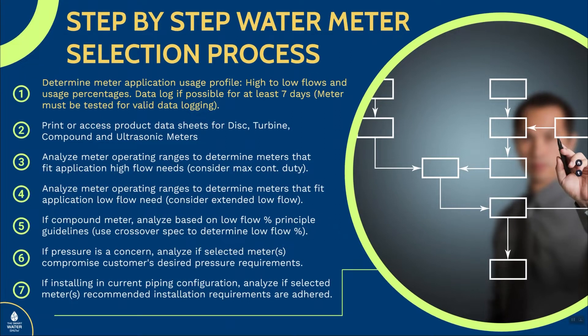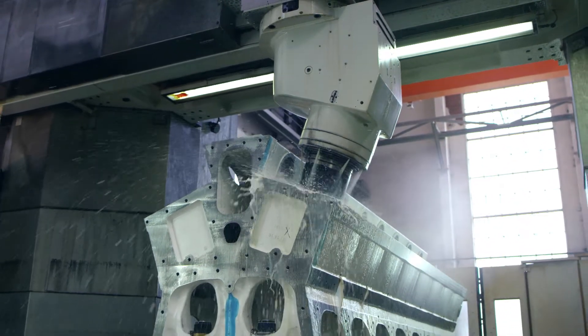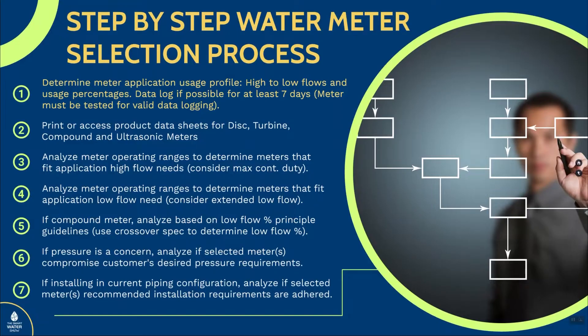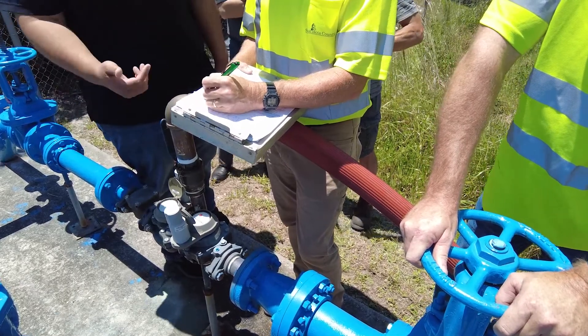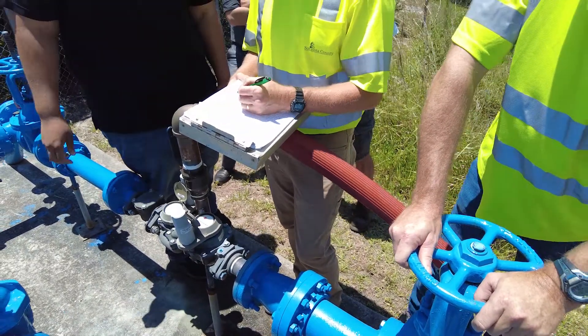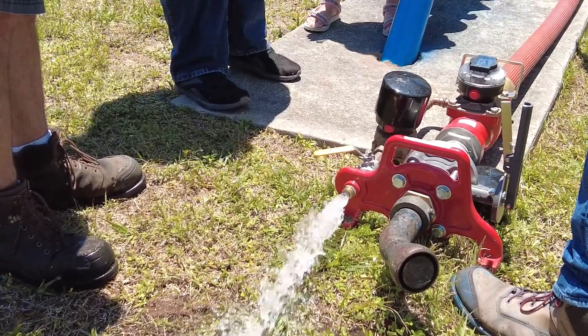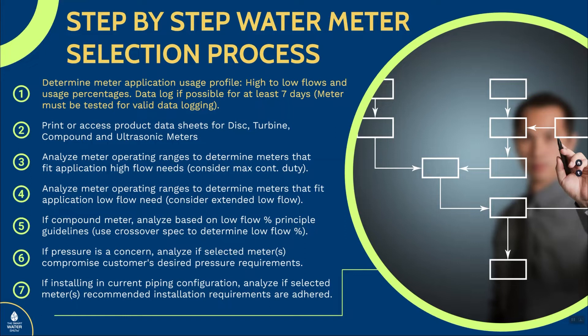The data logging process should be done for at least seven days because flows are going to be different during the week versus the weekend. If you don't run it for seven days, you might be misapplying a meter. Also, you actually have to test the meter prior to data logging. Otherwise, if the meter is only 80% accurate or there's something faulty with it, the data you collect means nothing — it could be all wrong, and you could really be misapplying the wrong meter for that application.